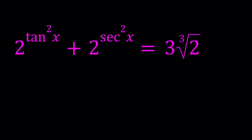Hello everyone, in this video we're going to be solving an exponential trigonometric equation. Now we have 2 to the power tangent squared x plus 2 to the power secant squared x equals 3 times the cube root of 2. Such a weird number, such an irrational number, but we're going to solve this equation.